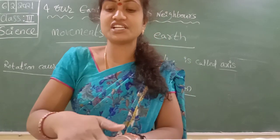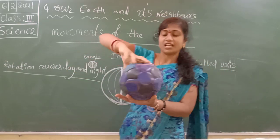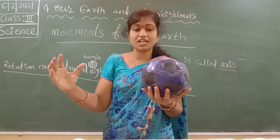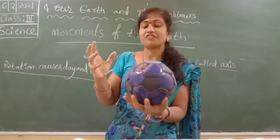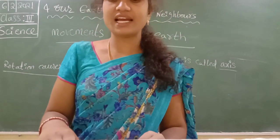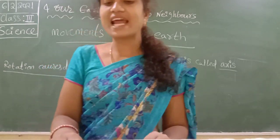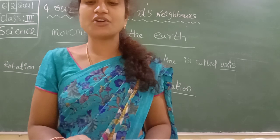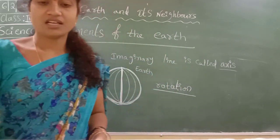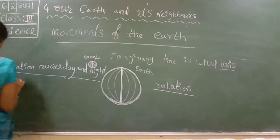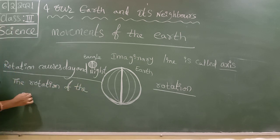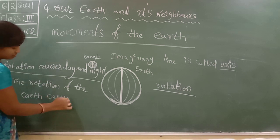The Earth goes on rotating. The sun stays constant — it is the Earth that rotates. That is why we face daily morning and night, morning to night, and the process keeps going. The day changes into night and night changes into day. Thus, the rotation of the Earth on its axis causes day and night.